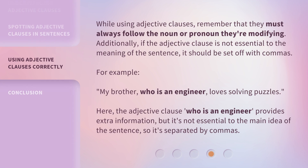While using adjective clauses, remember that they must always follow the noun or pronoun they're modifying. Additionally, if the adjective clause is not essential to the meaning of the sentence, it should be set off with commas. For example: 'My brother, who is an engineer, loves solving puzzles.' Here, the adjective clause 'who is an engineer' provides extra information, but it's not essential to the main idea of the sentence, so it's separated by commas.